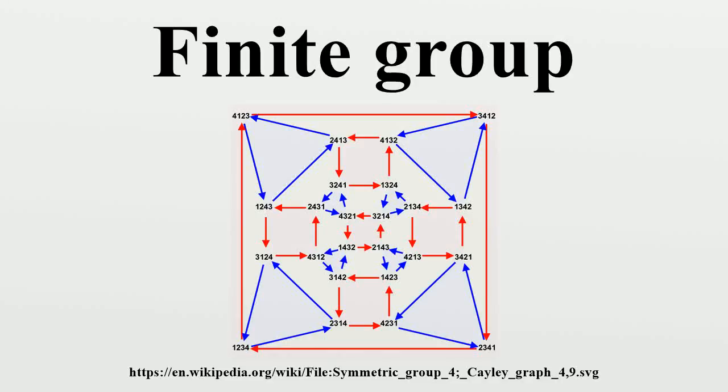In abstract algebra, a finite group is a mathematical group with a finite number of elements. A group is a set of elements together with an operation which associates, to each ordered pair of elements, an element of the set. With a finite group, the set is finite.